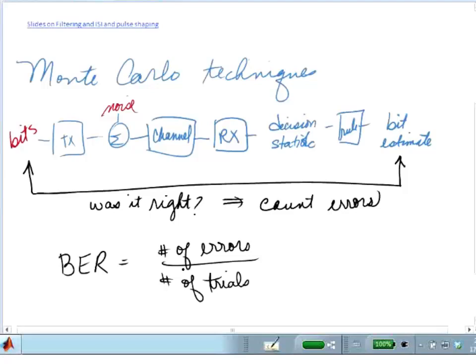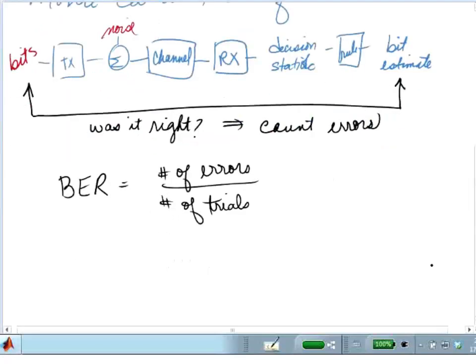When we run these simulations, we can run the same experiment many times, and each time we can estimate the bit error rate. So how is it long enough? How do I know that I've run it long enough? Well, if I don't measure any errors, does that mean the bit error rate is zero? Or does it mean that I haven't run enough trials? Well, of course, the only way to know is to run more trials.